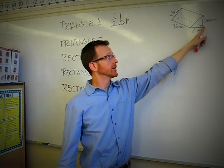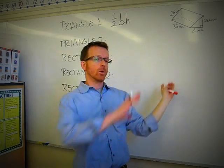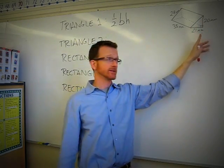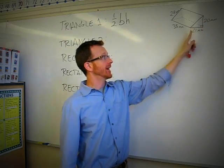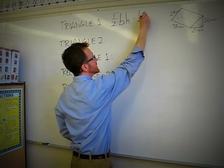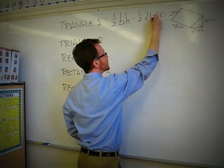We've got the height here and the base here. Or if we flip it, we could say the height is 21 and the base is 20. But we'll stick with it as the drawing indicates. The height is 20 and the base is 21. So one-half times 21 times 20.